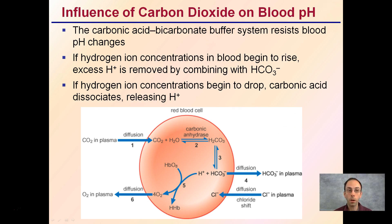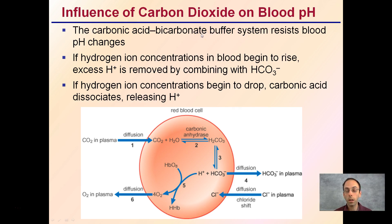The influence of carbon dioxide on blood pH: the carbonic acid and bicarbonate buffer system resists blood pH changes. If hydrogen ion concentrations begin to rise — excessive hydrogen ions added to the system — they can be removed by combining with bicarbonate. If hydrogen ion concentrations begin to drop, carbonic acid can dissociate, releasing hydrogen ions. This is how the buffer system works: it can take in excess hydrogen ions or release them, maintaining blood pH at approximately 7.35 to 7.45 — very tight control.